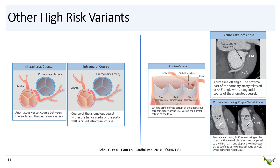In addition to an interarterial course, there are other coronary anomaly variants that are considered high-risk. An intramural course is similar to an interarterial course, except that the anomalous vessel courses within the media of the aortic wall. Anomalous coronary artery with a slit-like ostium, with an acute takeoff angle, or with a flattened ellipsoid proximal course are all considered high-risk as well.